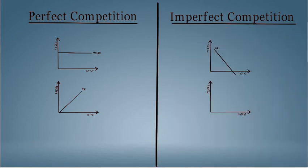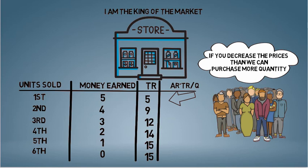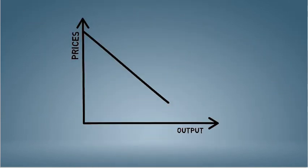In imperfect competition, the total revenue rises but at a decreasing rate. So, if we do total revenue divided by output over here, we see that the average revenue keeps on falling. Hence, the average revenue curve here will be a downward sloping curve.